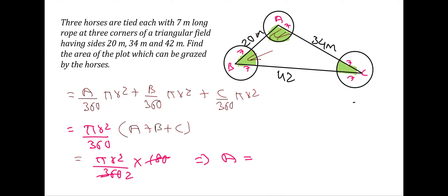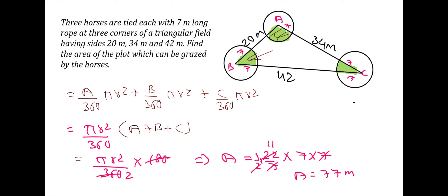The area equals pi r squared times one half. Pi is 22 over 7, and r is 7, so r squared is 7 times 7. The 7s cancel, and 2 cancels with 22 to give 11. So the required area is 77 meter square. Together, all three horses will graze a combined area of 77 meter square.